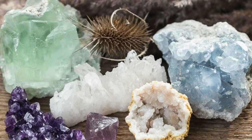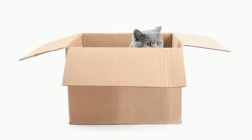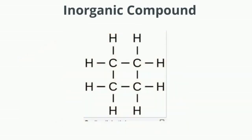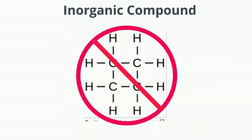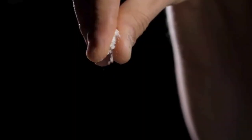A solid has a definite volume and shape — it will not take the shape of the container that it's placed into. An inorganic compound is typically a chemical compound that lacks carbon and hydrogen bonds. Examples of inorganic compounds include salt and water.